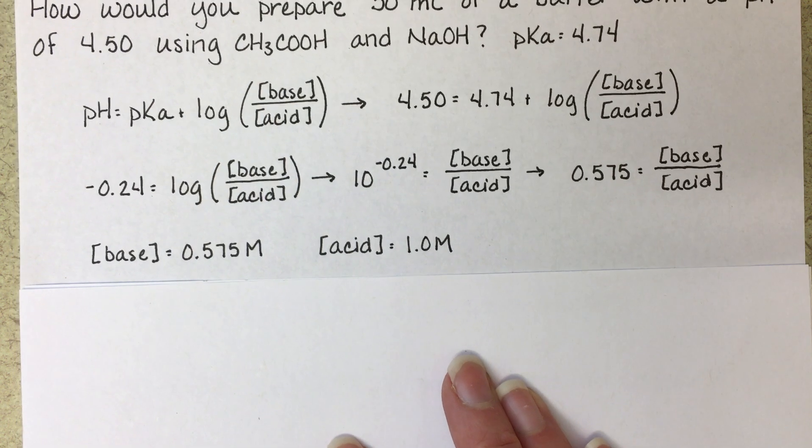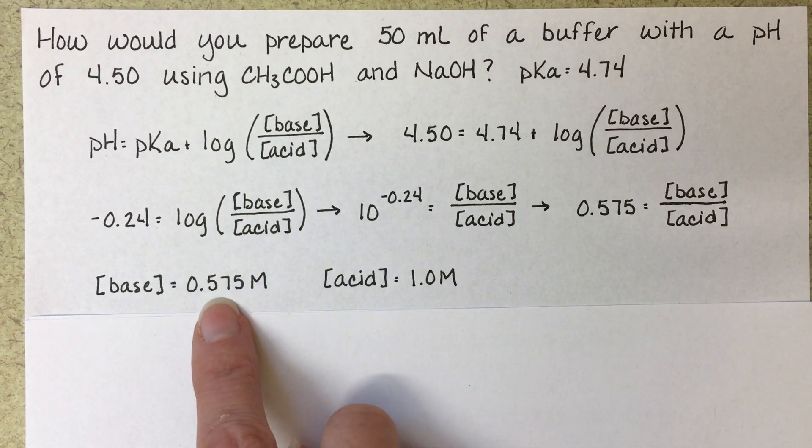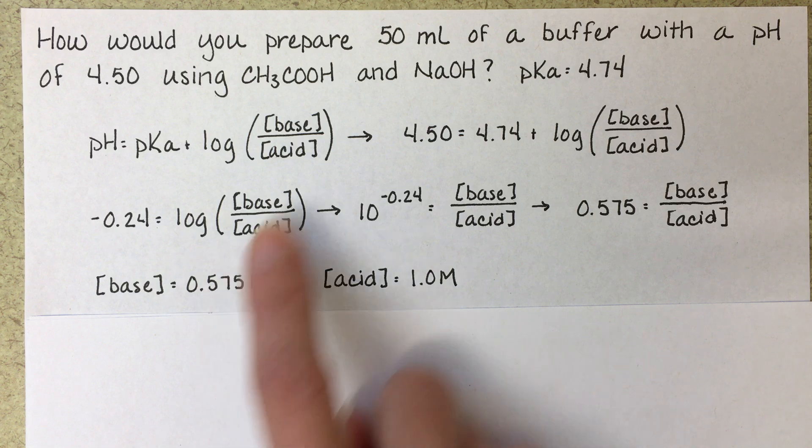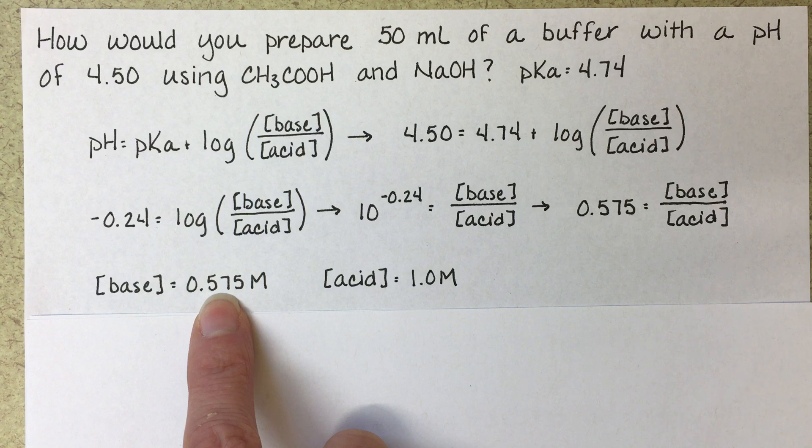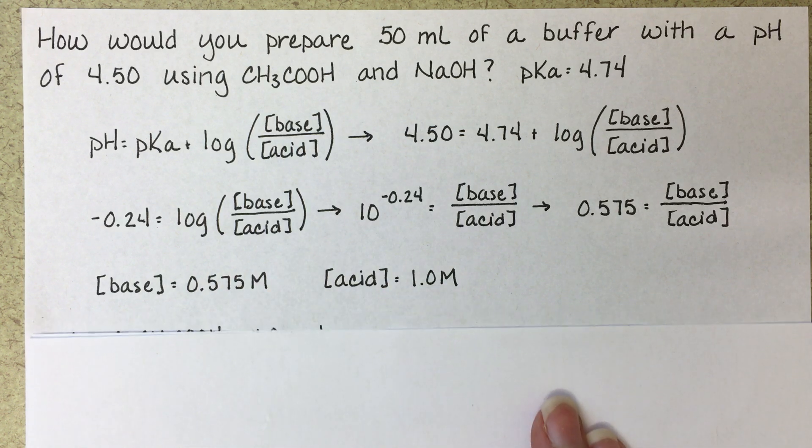So what we're going to do next is figure out how many moles of base we need to put in 50 mils of solution in order to get a concentration of 0.575. And we'll do the same thing for the acid.